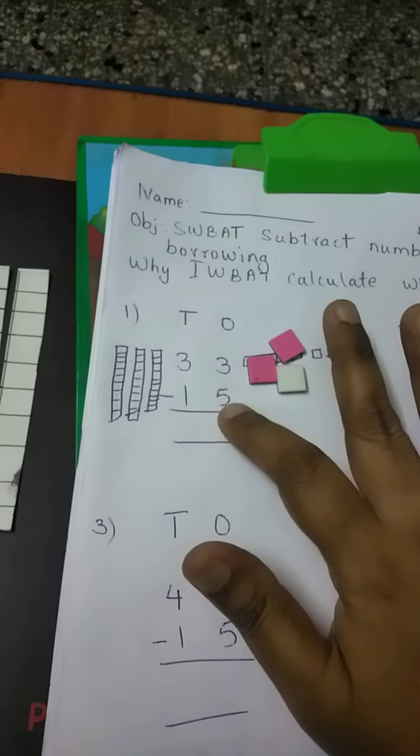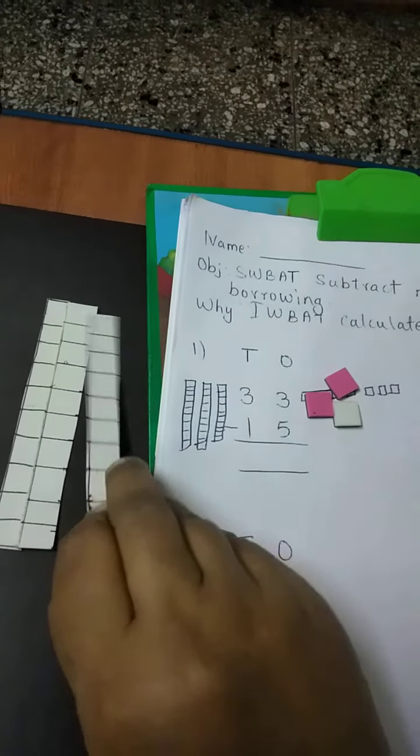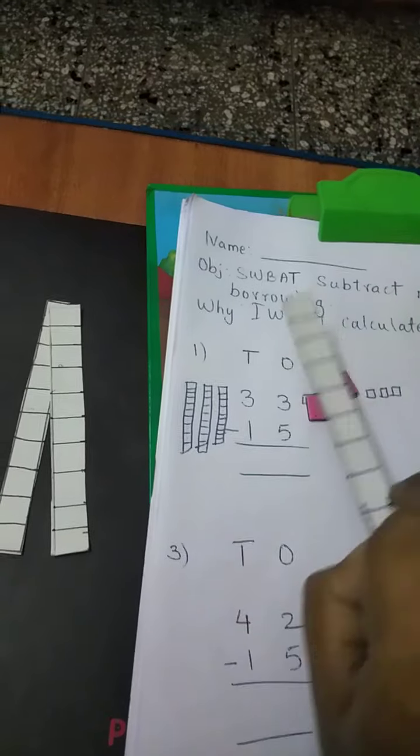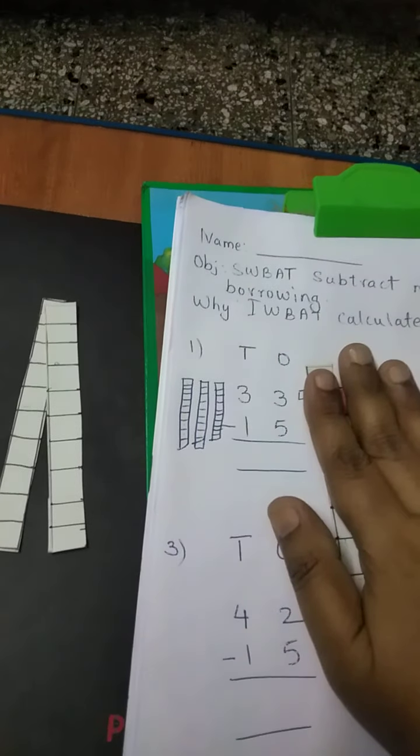Now from this I have to subtract 5. Can I subtract 5 from 3? No. So what will I do? The one ten that is here, I will take it here. So what will it become? 13. This number becomes 13.